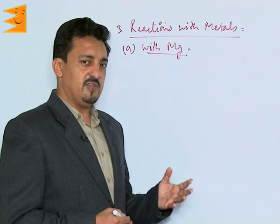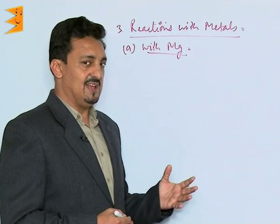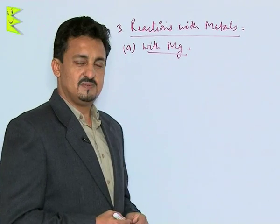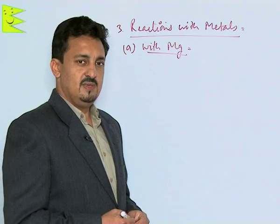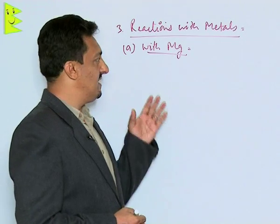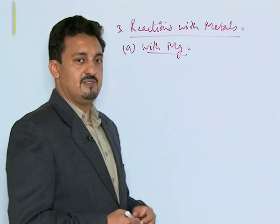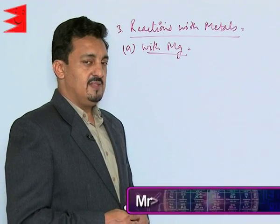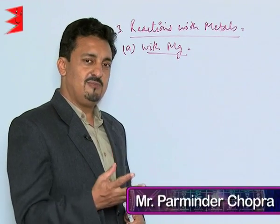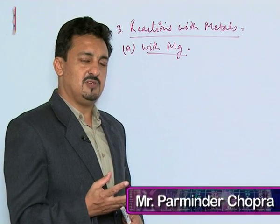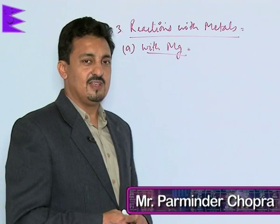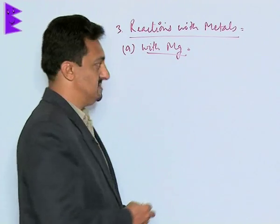The third category of reactions of alkyl halides are reactions with metals. First in this category is the reaction with magnesium, which leads to the formation of an organometallic compound called Grignard's reagent.